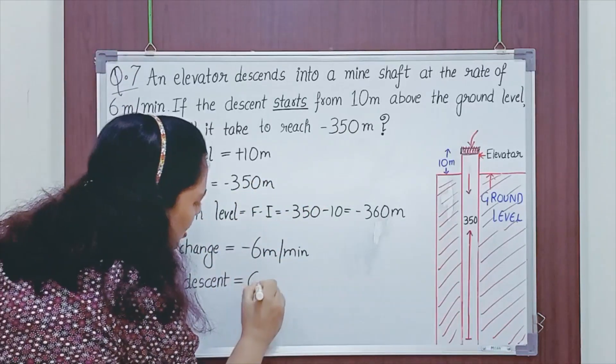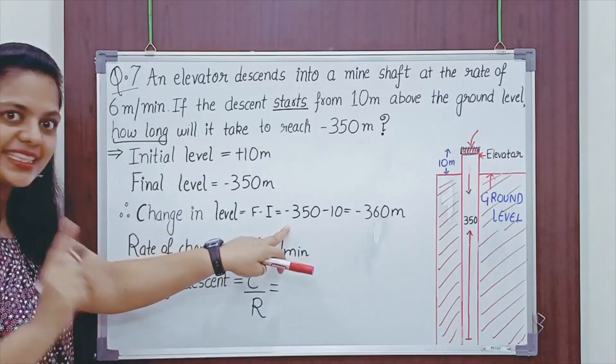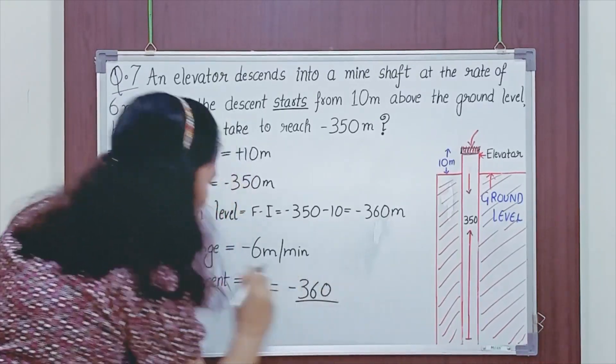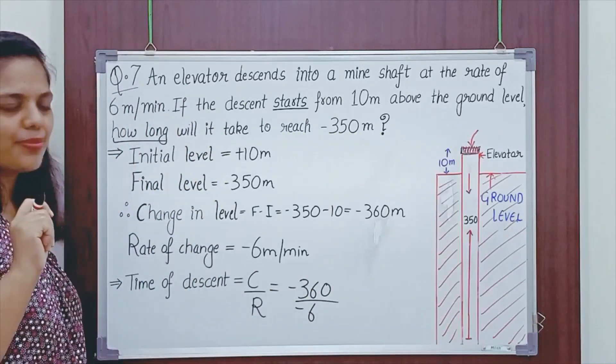Time of descent formula is change upon rate. Be careful, change upon rate. Change is minus 360. Rate of change is minus 6. Now, why am I doing minus 360 upon minus 6? Let me explain in simple terms.